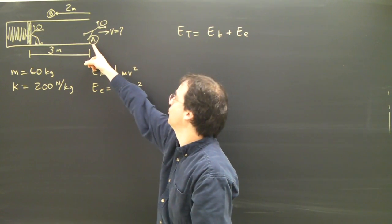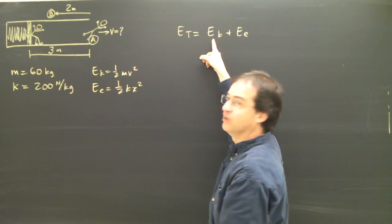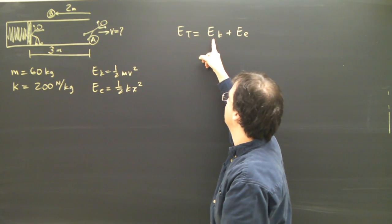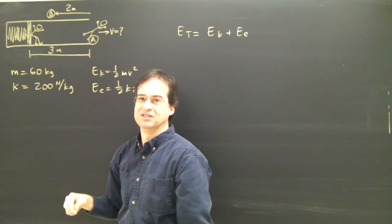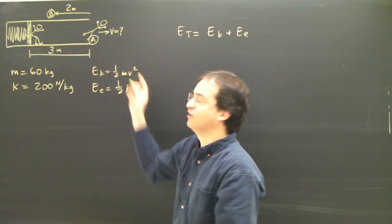If I want to know how fast this person's going here then I need to know the numbers that go in here. But in order to do that I need to know what is the total anywhere in the system. So first I have to find the total energy of this system.